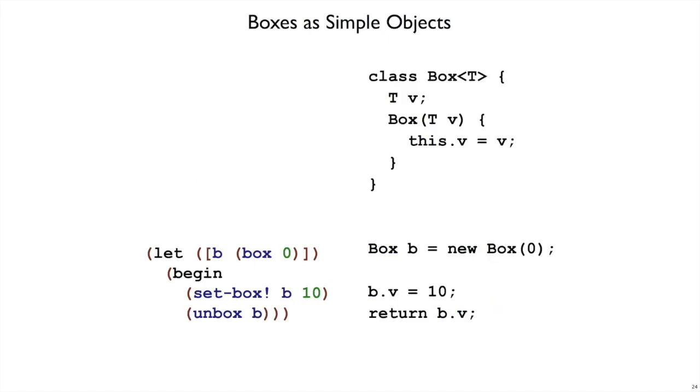Here's another view of the same thing. I said a box is like a single field object, so if you wrote it in Java, you might write something like this, a class Box<T> that has a single field that has a T in it. When you create a box, you initialize that field.